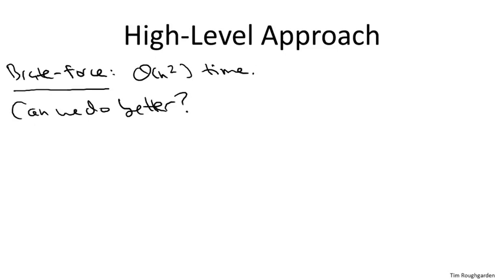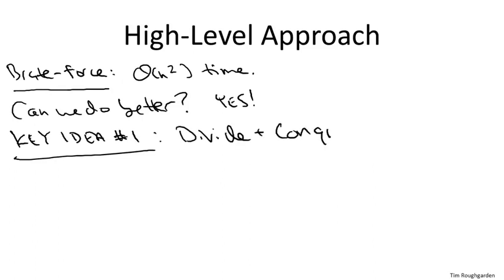The only problem is, as we just observed, there's n choose two, or a quadratic number, of potential inversions. So this algorithm's always going to run in time, quadratic in the array length. Now remember the mantra of any good algorithm designer. Can we do better? And the answer is yes, and the method will be using divide and conquer. The way in which we divide will be motivated directly by merge sort, where we recur separately on the left and the right halves of the array. We're going to do the same thing here.